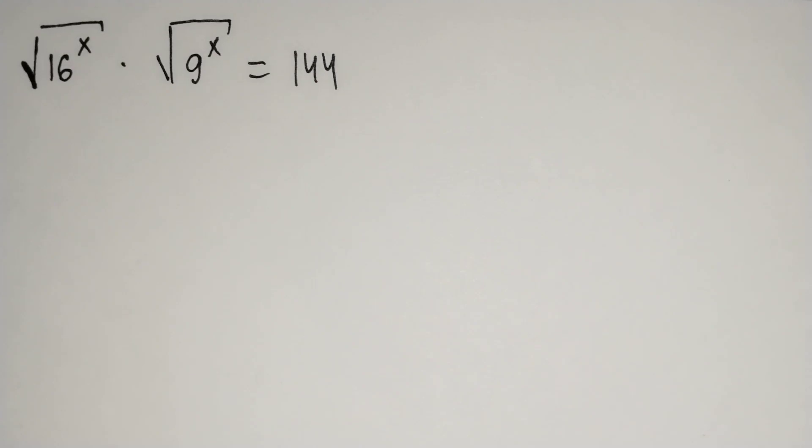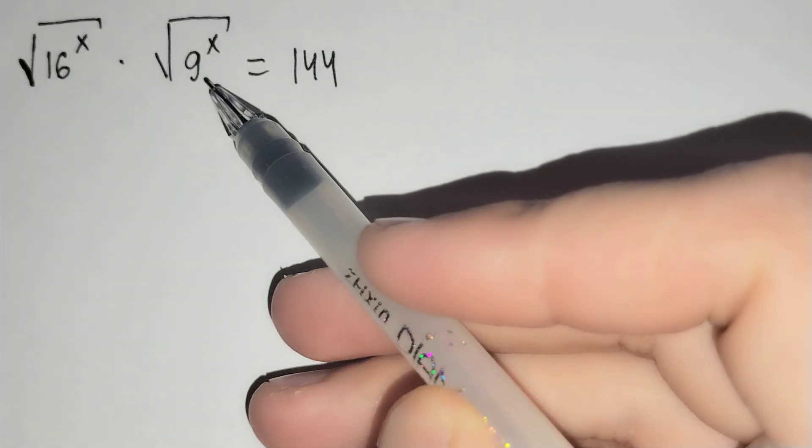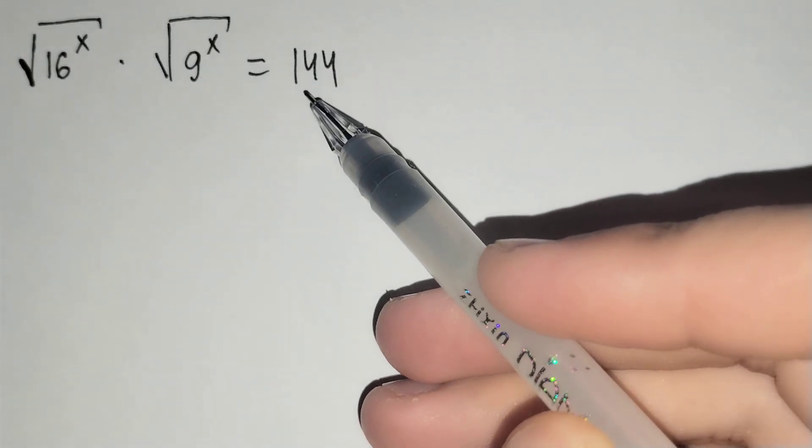Hi everyone, in this video you will learn how to solve this problem. The square root of 16 power x times the square root of 9 power x equals to 144.